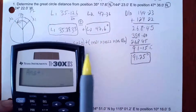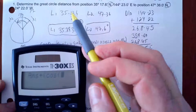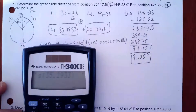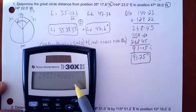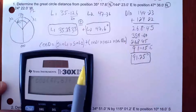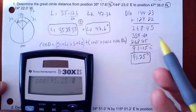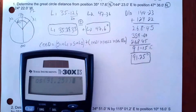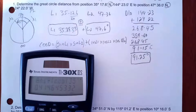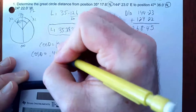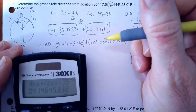Then times cosine(47.6), close that parenthesis, times cosine(91.25), close that parenthesis. Technically I should close the outer parenthesis too, but the calculator knows what to do. Cosine D equals 0.4146.